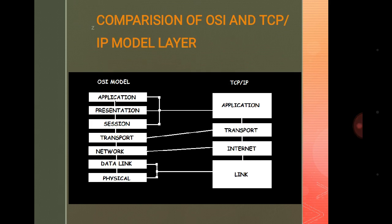When comparing the TCP/IP model to the OSI model, the Application Layer of TCP/IP performs the job of the Session, Presentation, and Application layers of the OSI model. The Transport Layer of TCP/IP is equivalent to the Transport Layer of the OSI model. Similarly, the Internet Layer is equivalent to the Network Layer, and the Link Layer is equivalent to the combination of the Physical and Data Link layers of the OSI model.